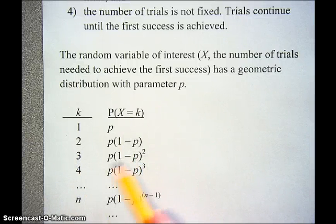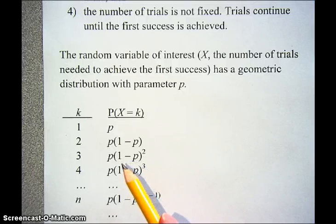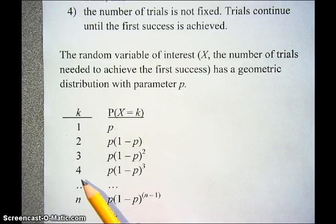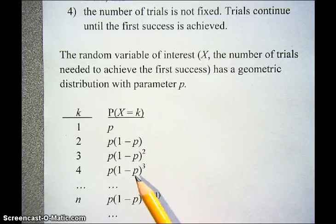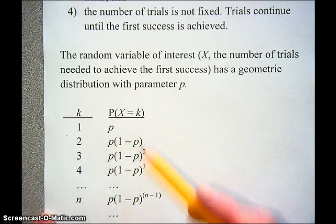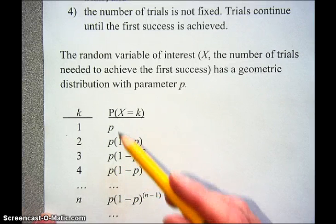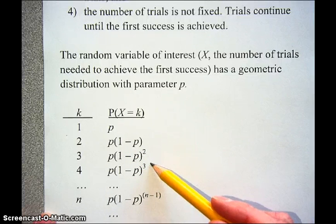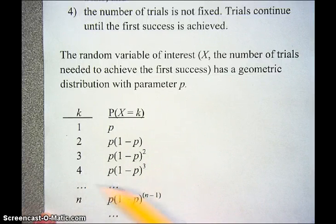The probability that X equals 3 assumes failures on the first and second trials and a success on the third, so we have P times (1 minus P) squared. For X equals 4, the probability is P times (1 minus P) cubed — three failures followed by a success on the fourth trial. Following this pattern, (1 minus P) is raised to a power one less than the number of trials.